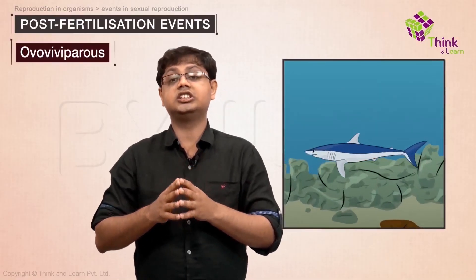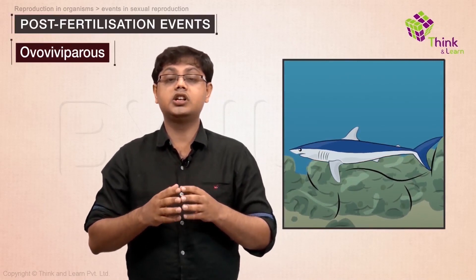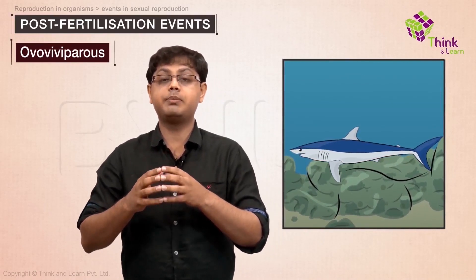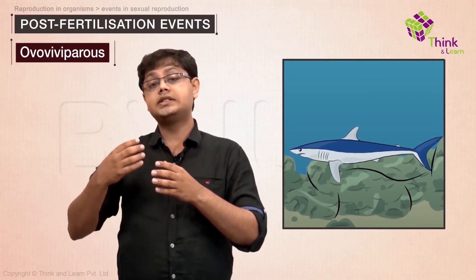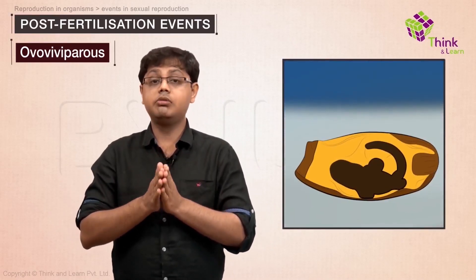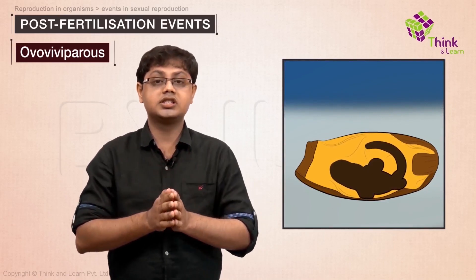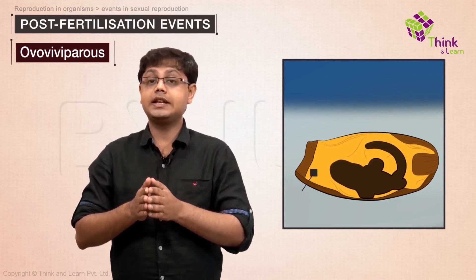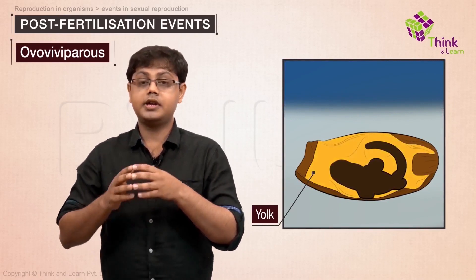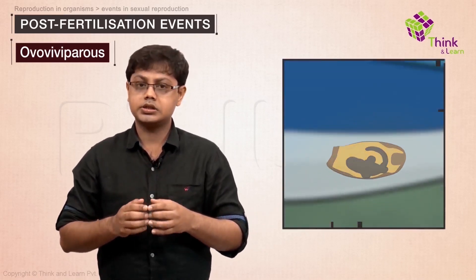Ovoviviparous animals such as sharks and rattlesnakes retain the fertilized egg, and the development of the embryo takes place inside the animal body. However, the animal does not provide nourishment for embryogenesis, which is basically obtained from the yolk in the egg itself. These animals give birth to young ones.